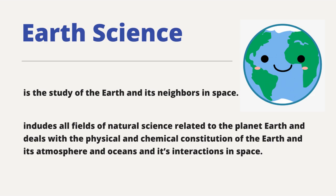For example, some Earth scientists use their knowledge of the Earth to locate and develop energy and mineral resources. Others study the impact of human activity on Earth's environment and design methods to protect the planet. Some use their knowledge about Earth processes such as volcanoes, earthquakes, and hurricanes to plan communities that will not expose people to these dangerous events.